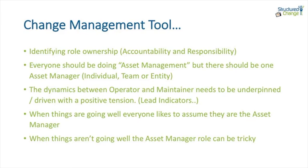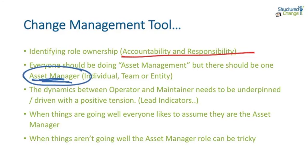So from a change management perspective, by doing the assessment against these four roles, we understand the true accountability and responsibility. We also realise that everyone is doing asset management, but there should only be one asset manager — that's a key thing. When things aren't going well, the maintainer will often be blamed, whereas when things are going very well, the operator will take the credit. It can drive bad behaviours. The dynamics between the operator and maintainer need to be underpinned by striving for lead indicators, because lead indicators are futuristic and bring two teams together to achieve future value, as opposed to reflecting on past cost.